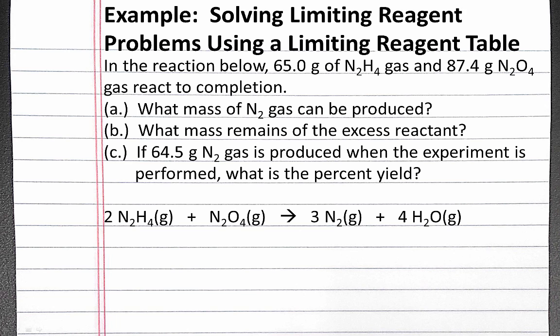We want to calculate the mass of N2 gas that can be produced, the mass that remains of the excess reactant, and if 64.5 grams of N2 gas is produced when the experiment is performed, what is the percent yield?